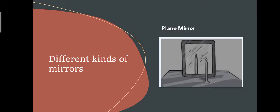Now we will read about different kinds of mirrors. Mirrors are basically of two types: the plane mirror, which we use at home, and the spherical mirror. In the plane mirror we look just like ourselves, but in a spherical mirror the image appears different from the object.